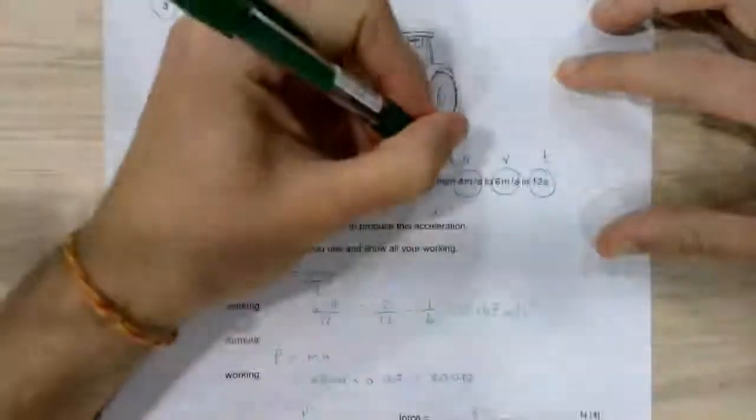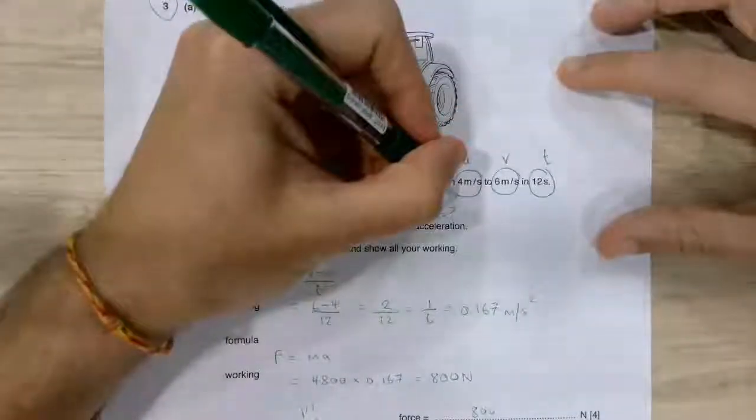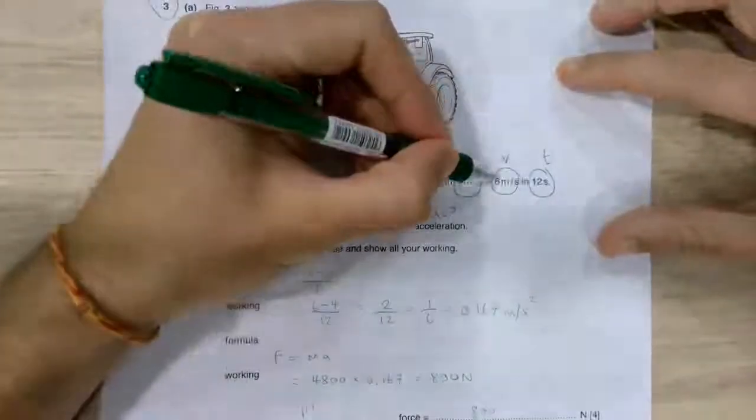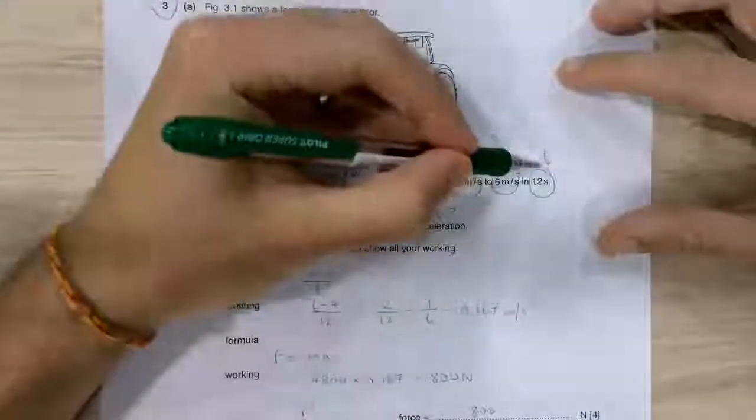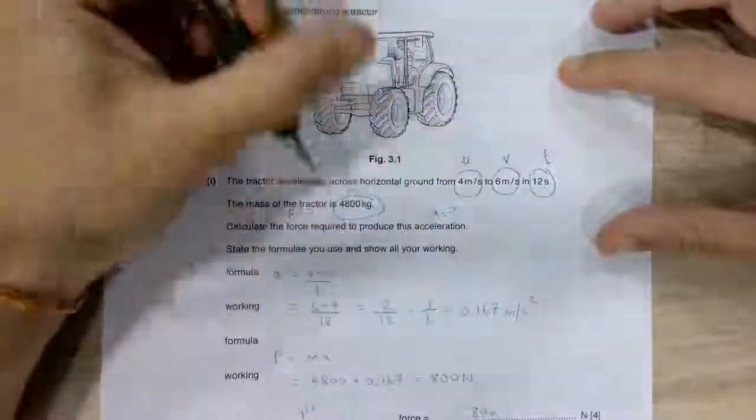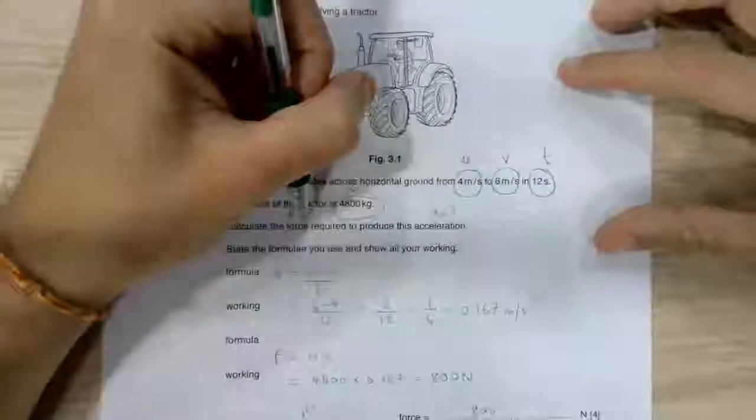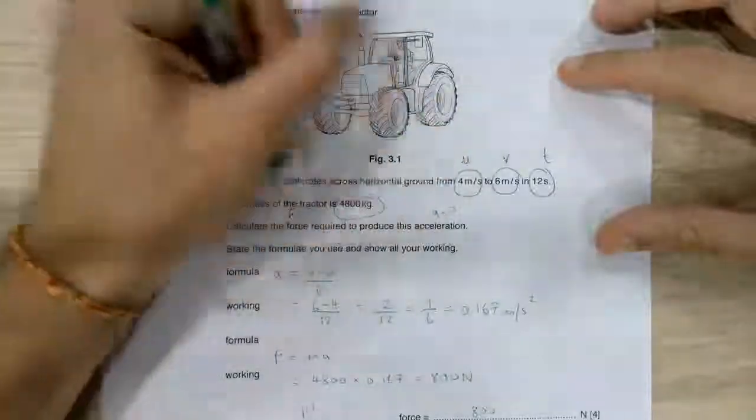You're told the initial speed, 4 meters per second. You're told the final speed, 6 meters per second. You're told the time, 12 seconds. You're told the mass, 4800. And you're being asked to calculate some stuff.